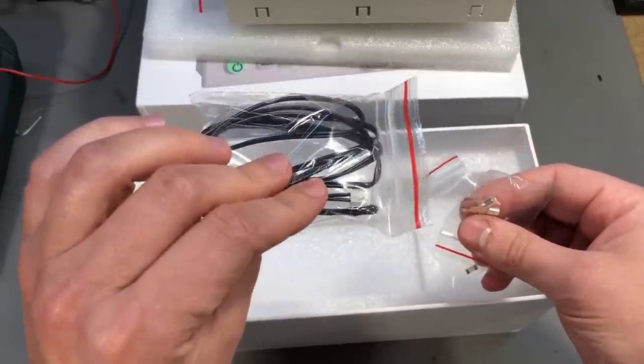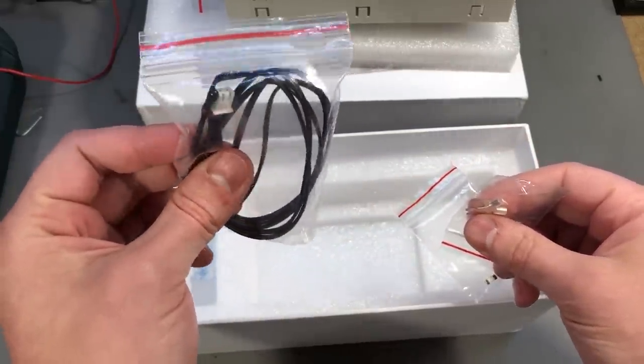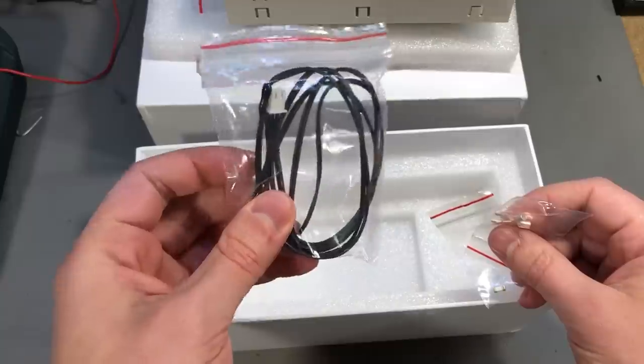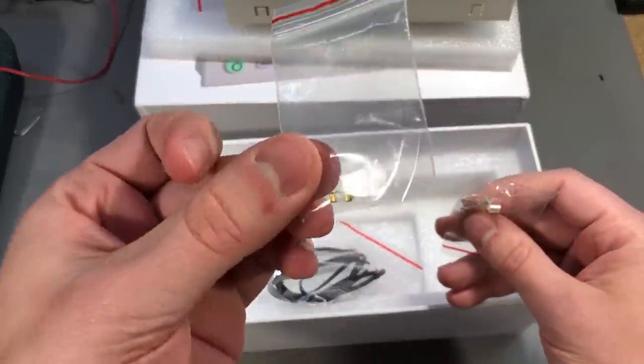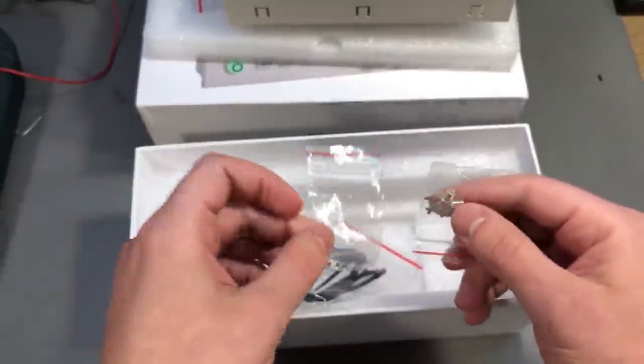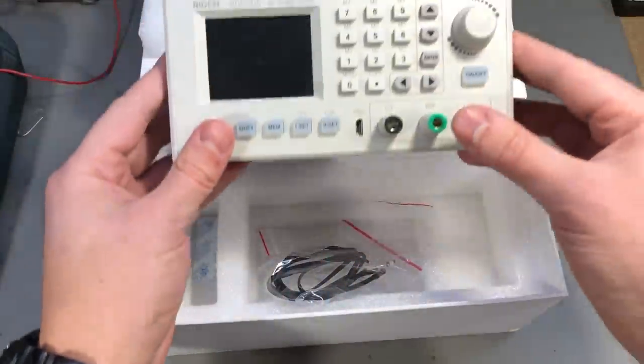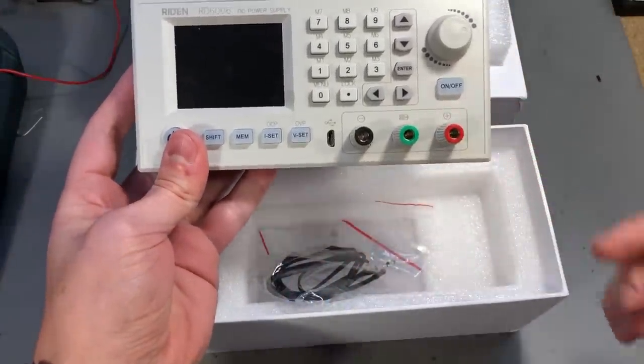Inside the box we also get a thermistor which could be used for monitoring the battery charging function. We get a replacement 10 amp fuse and a couple of spade connectors which I assume fit the input terminals.